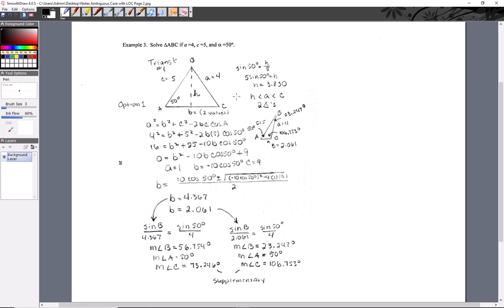We did some exploratory work. We dropped down an altitude. By the way, you don't have to take notes on this unless you want to, just sit back and absorb it. We dropped down an altitude and compared it to side a, which is your swinging side, and found that a was greater than your altitude but less than side c. That's the recipe for two triangles.